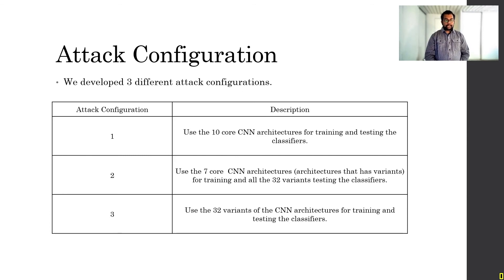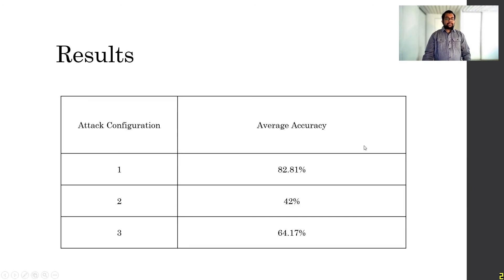For the attack configuration 3, we have used the idea that the attacker has access to these 32 variants and has trained his classifier based on that. Once he gets the data from the victim, he can classify what variant that victim is using. Our results came up and we found that for attack configuration 1, we have the highest accuracy, which is 82.81%. For attack configuration 2, we have an accuracy of 42%. And for attack configuration 3, we have an accuracy of 64.17%.